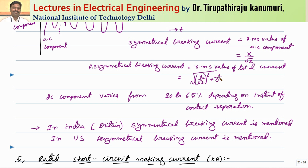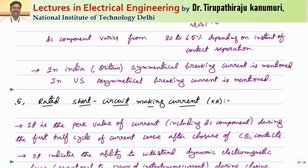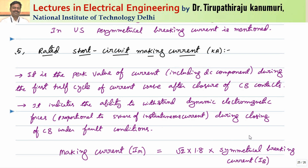The DC component at the instant of contact separation varies from 20% to 65% depending on the timing. In India and Britain, the symmetrical breaking current is used to specify breaking capacity, whereas in the USA the asymmetrical breaking current is used.